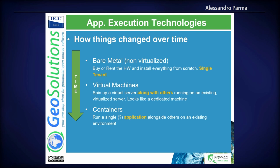Then things evolved over time — virtualization technologies were invented. From there you were able to run multiple virtual servers on top of a single physical server, so you were able to run your applications along with others on the same machine. From the application standpoint, this looks pretty much exactly the same as a dedicated machine, so it was quite easy to go from one kind of technology to the other without requiring any work from the developers.